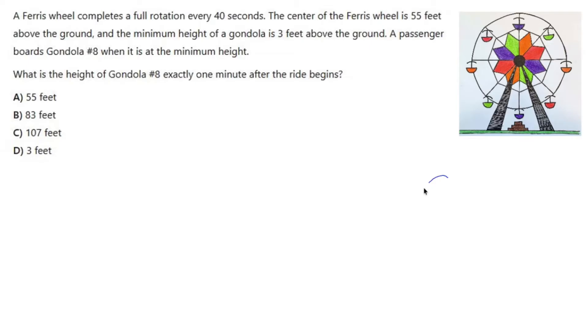I didn't leave myself a whole lot of space, so let me just draw a circle with the center on it. You're going to be 55 feet off the ground. The minimum height of a gondola is 3 feet above the ground, so that would be you at the very bottom.